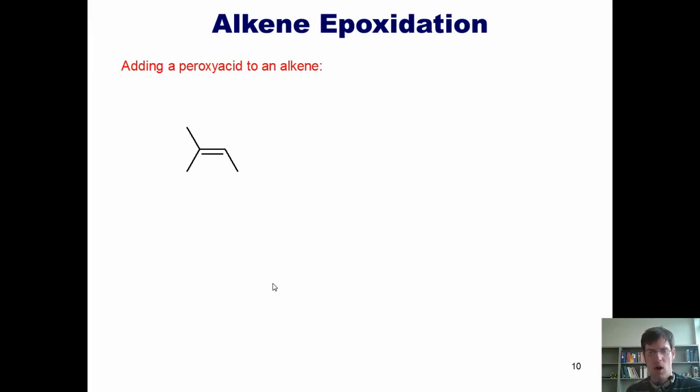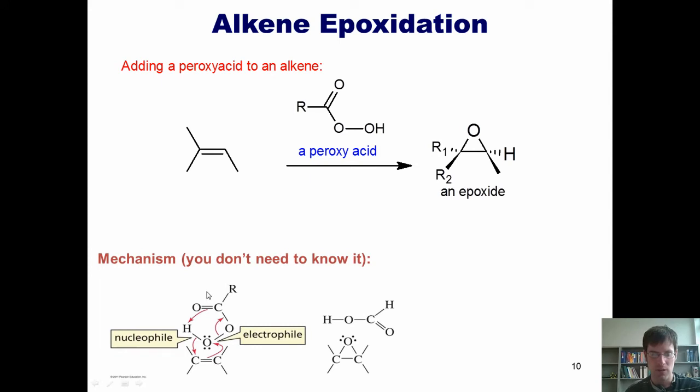Now, you should know that you can also oxidize alkenes by using this kind of reagent, called a peroxy acid, which produces an epoxide. Now, although I don't require you to know the mechanism for this reaction, I'll show it to you here just for your reference and curiosity. You should know that the stereochemistry of the epoxide here has to have the oxygen be cis across this bond.